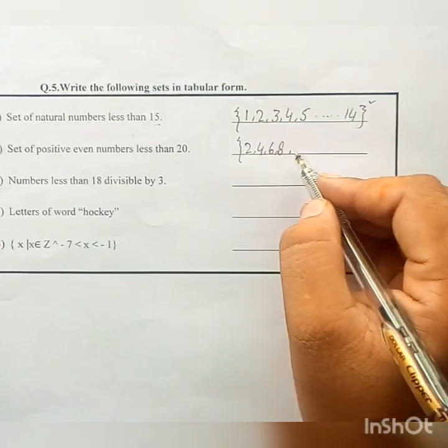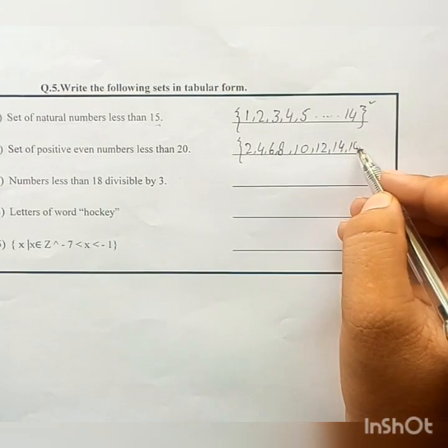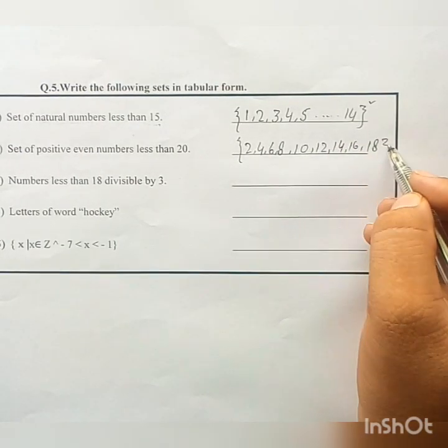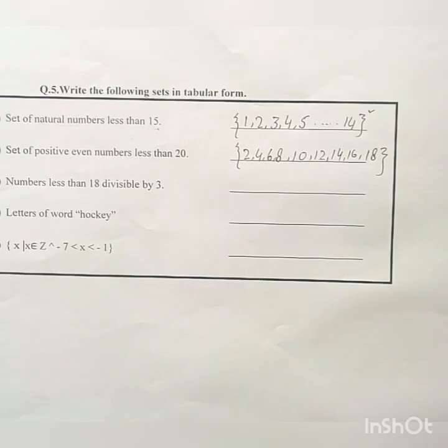8, 10, 12, 14, 16, 18}. These are the numbers which are less than 20.